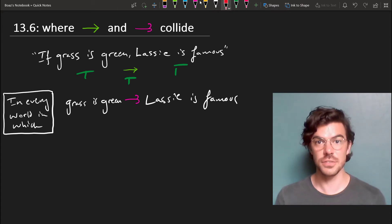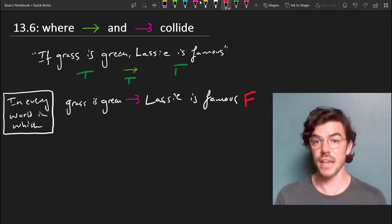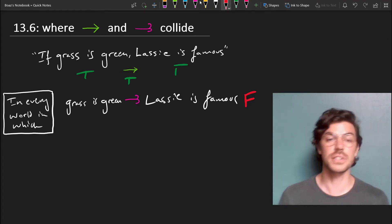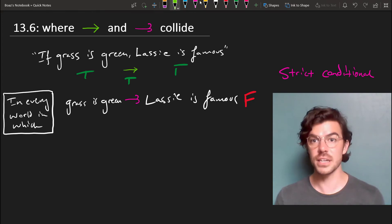And this is obviously false because there are conceivable worlds in which grass is green and Lassie isn't famous or Lassie doesn't even exist. So this is our strict conditional, and it's meant to deal with some of these problems of the material conditional.